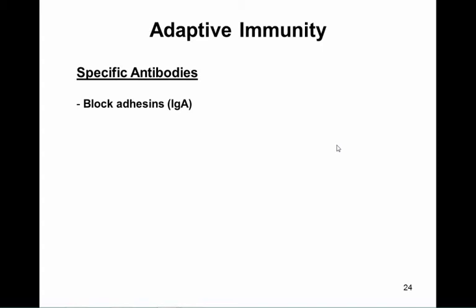Antibodies can have several effects. They can block adhesion — antibodies against fimbrial antigens or non-fimbrial adhesins stop the first step of infection, which is especially important for IgA secreted at mucosal surfaces. Other antibodies bind to transport proteins on the bacterial surface and prevent growth in the human body, particularly antibodies against ion transport proteins — for example, blocking the permease needed for siderophore uptake prevents iron acquisition.